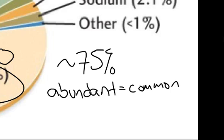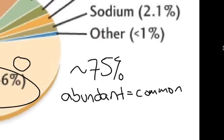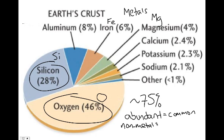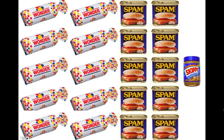The most common two are oxygen and silicon. Something to notice about iron and magnesium is that they're both metals, whereas oxygen and silicon are non-metals. We'll get into that just a little bit later on.